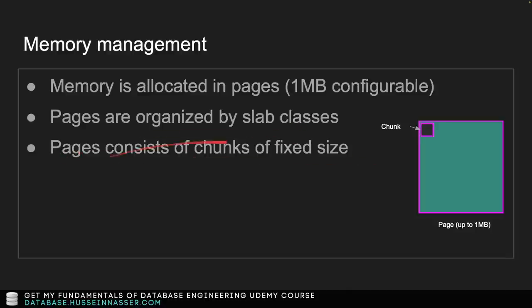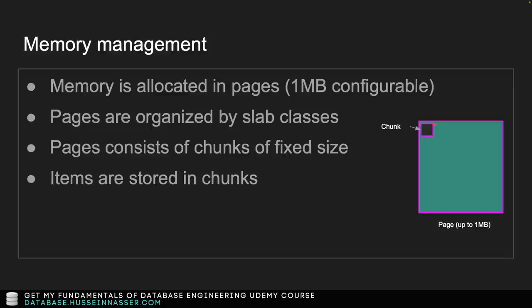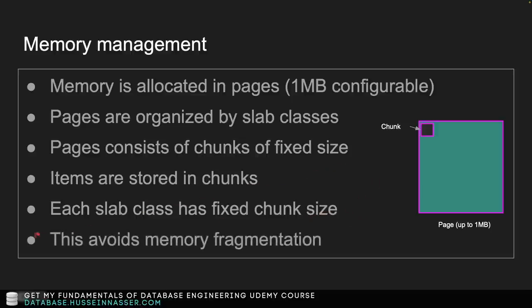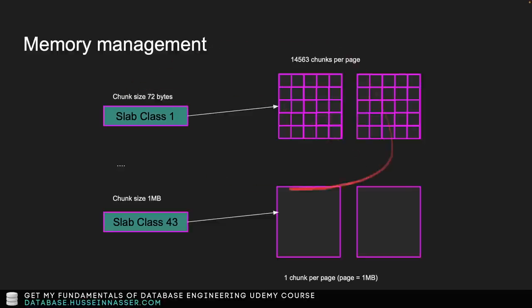Your item, including key and value, will be stored in a chunk. If the chunk size is 100 bytes and your item is 90 bytes, you lose 10 bytes within that chunk — there's nothing you can do about it. There will always be a small free space within the chunk. Each slab class has a fixed chunk size, which avoids memory fragmentation.